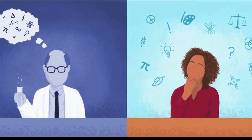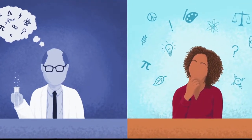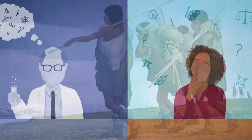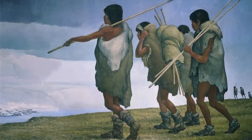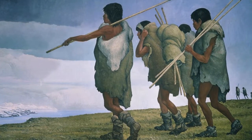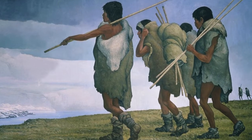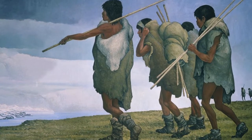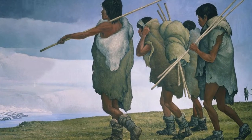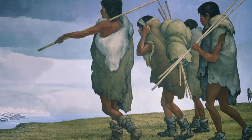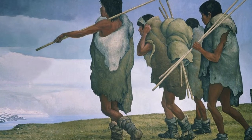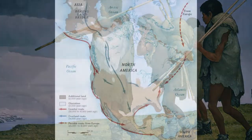Competing scientific discoveries and opinions place the crossing of human populations from Asia at approximately 39,000 to 17,000 years ago.